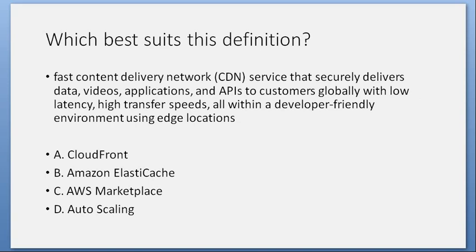Which best suits this definition? Content delivery network (CDN) service that securely delivers data, videos, applications, and APIs to customers globally with low latency, high transfer speeds, all within a developer-friendly environment using edge locations. A. CloudFront. B. Amazon ElastiCache. C. AWS Marketplace. D. Autoscaling. Answer: A. CloudFront.